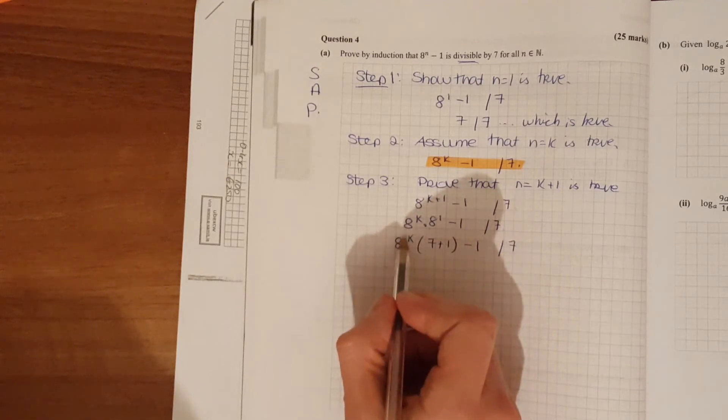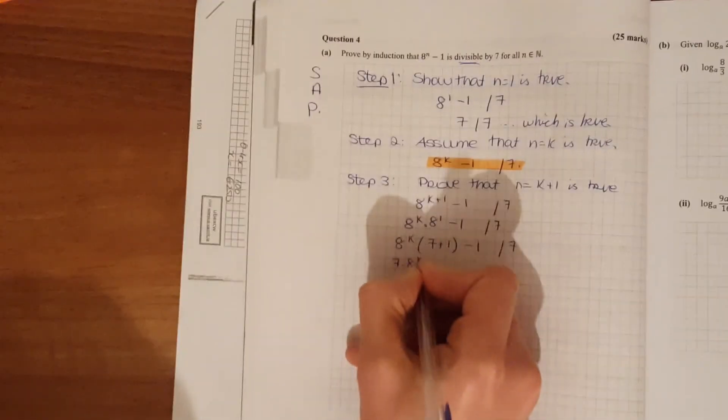Now brackets. I multiply everything inside the bracket by what's outside. 7 times 8 to the k.